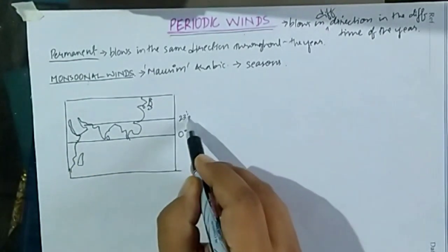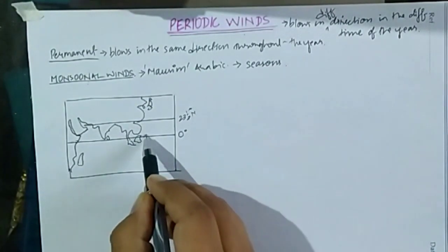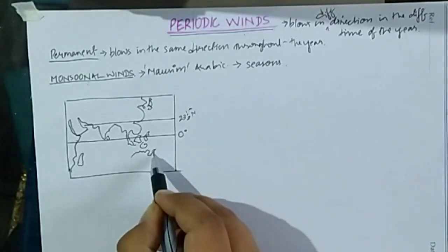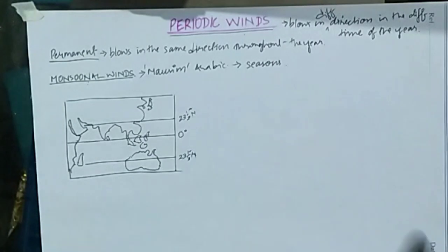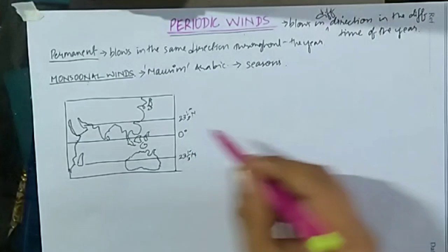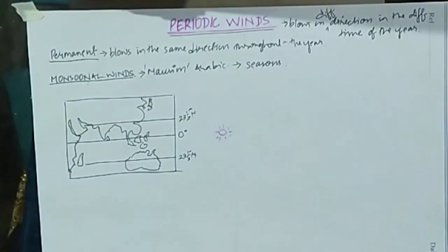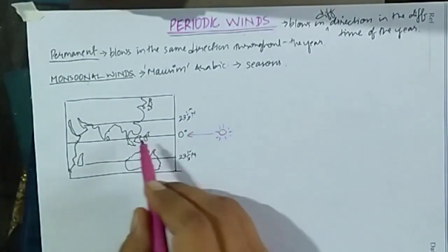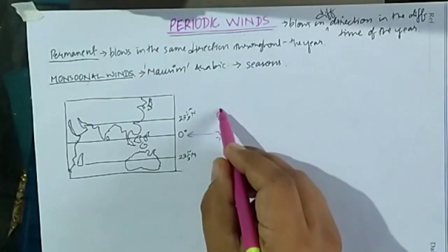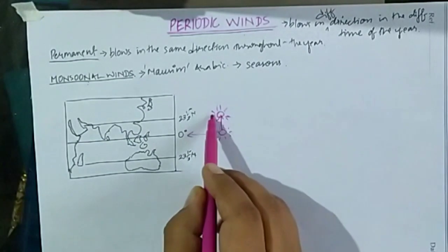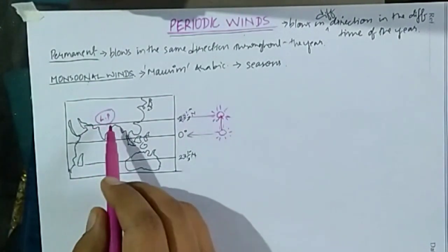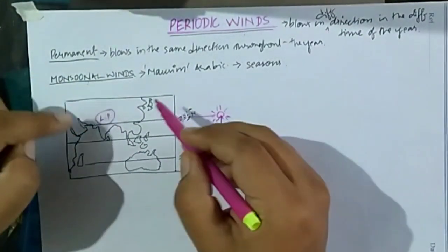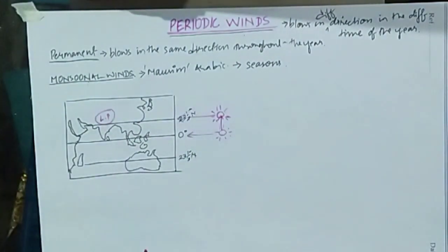Here in the diagram comes the Tropic of Cancer, which passes through the center of our country and the Indonesian archipelago. This one is Australia and the Tropic of Capricorn passes through it. When the sun moves towards the Tropic of Cancer, the low pressure will be developed over the Tropic of Cancer areas - in the northern plains of India and the Peshawar of Pakistan. The temperature becomes very high and low pressure is created.